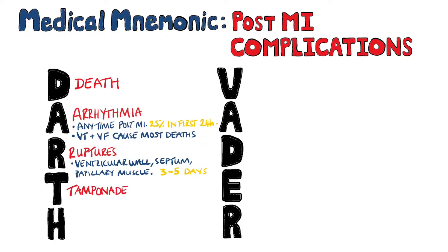Next we have T for tamponade. A cardiac tamponade in the post-MI setting is frequently associated with a ventricular wall rupture, so the timing of a tamponade often coincides with the rupture — three to five days post-infarction.